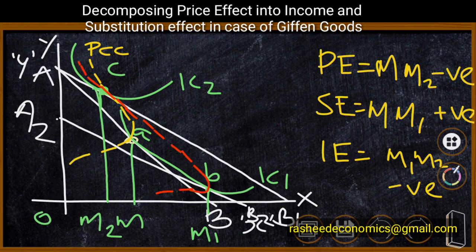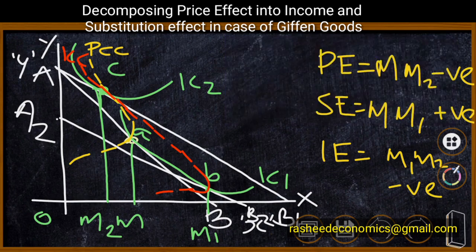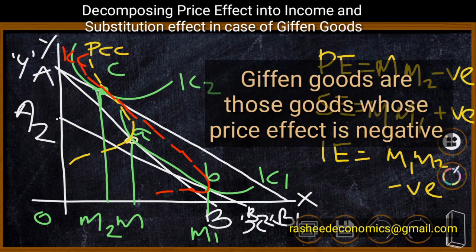Because the negative income effect is stronger than the positive substitution effect, we have a steeply backward bending income consumption curve (ICC). The price consumption curve (PCC) is also backward bending because of the stronger effect of this backward bending ICC. This is the case of splitting up of price effect into income effect and substitution effect for a Giffen good — a special type of inferior good where the negative income effect dominates, making the price effect negative.